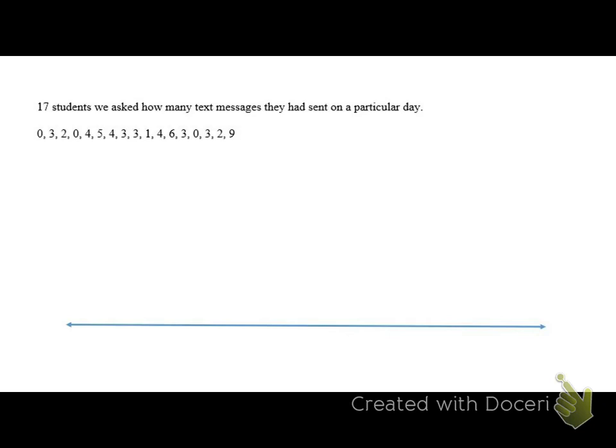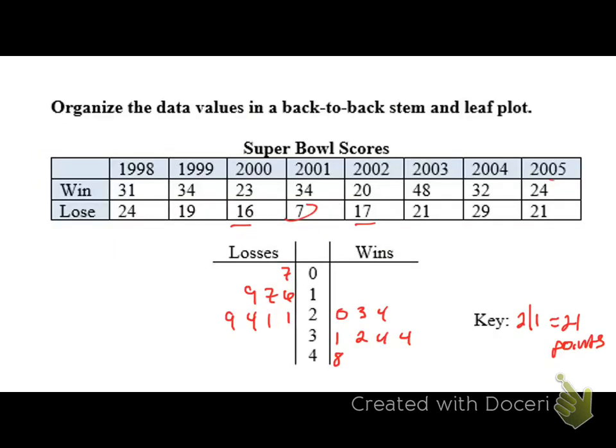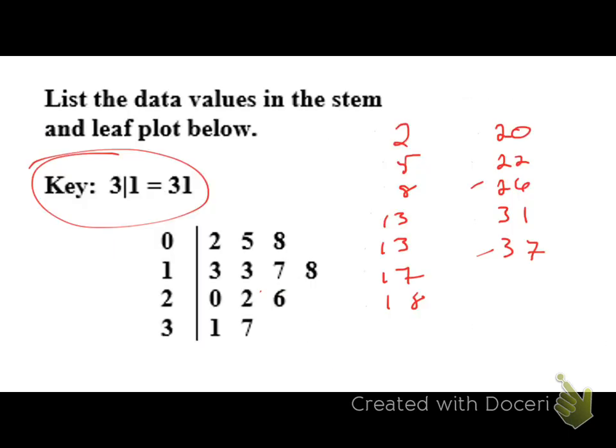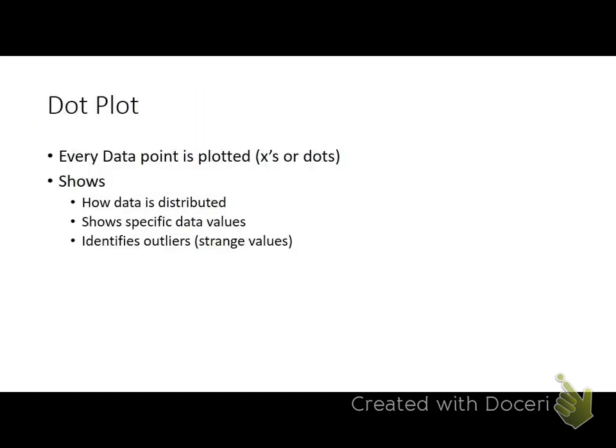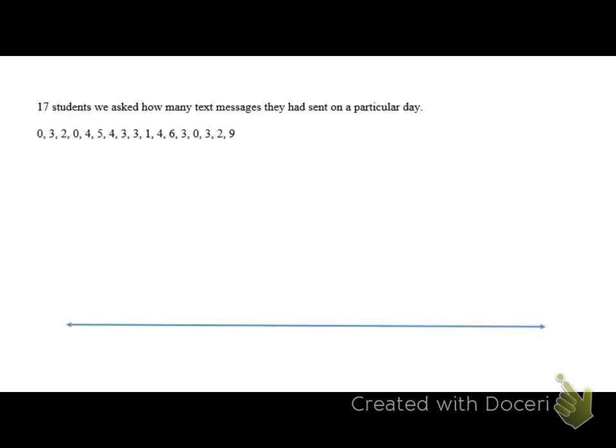So, like our stem and leaf plots and our histograms, by the way, when we create a stem and leaf plot, we need to make sure that we're labeling our graph, just like we do for histograms as well. Now, when we do a dot plot, we want to label this as well. And there's only one axis to label. So we can call this number of text messages. And you want to scale your horizontal axis to where it covers all possible data points. So we want to go from 0 to 9. So you could, if you wanted to, make this 0. And then maybe put a 2 here, a 4 here, a 6 here, an 8 here, and a 10 here.